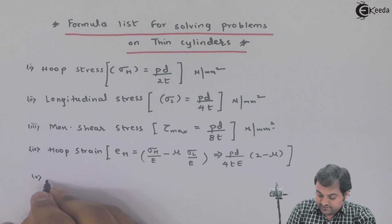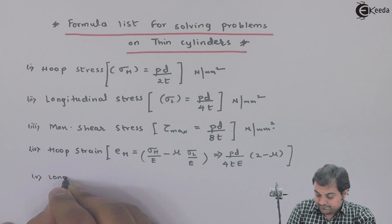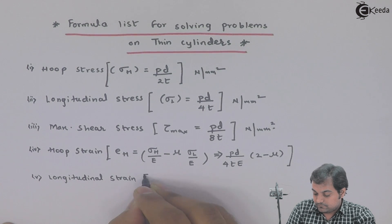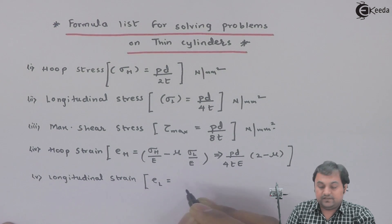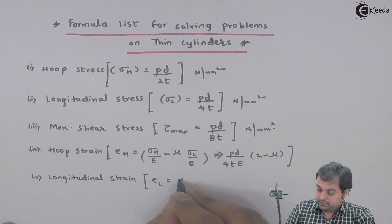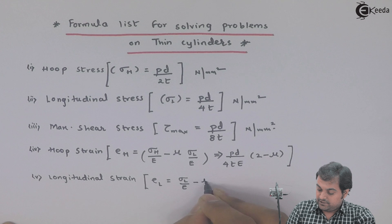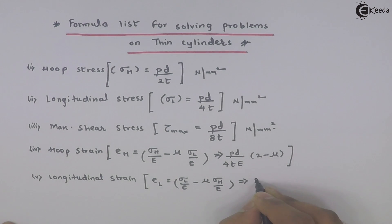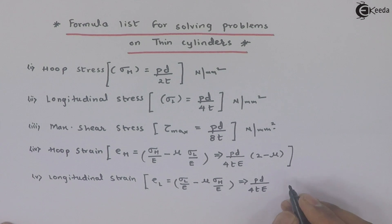Next, after this we have longitudinal strain. E suffix L will be equal to longitudinal stress upon Young's modulus minus mu into hoop stress upon Young's modulus, and that can be reduced to PD upon 4tE into (1 minus 2mu).